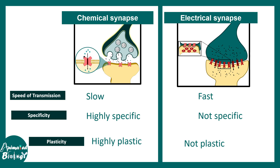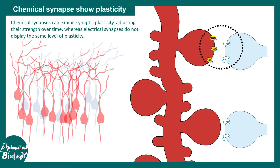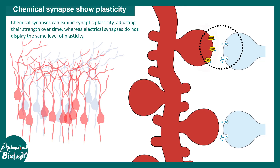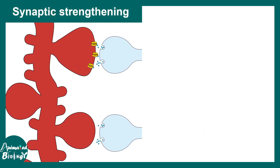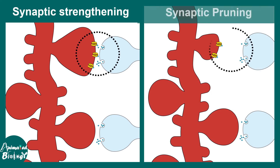Let us understand plasticity in a bit more detail. Plasticity is a parameter that allows the synapse to change with respect to the stimulus — this is an important property. Using this property, a chemical synapse can grow stronger through synaptic strengthening. Also using this same principle, synaptic weakening or synaptic pruning can happen. So new synapses could be made and old synapses could be broken using this plasticity principle.